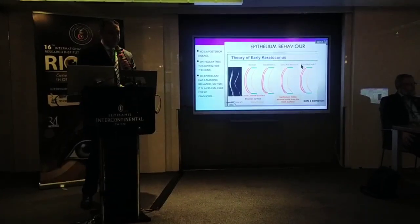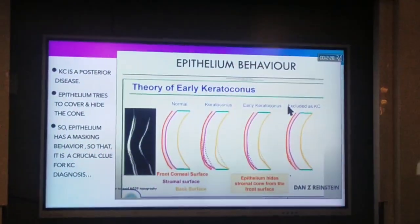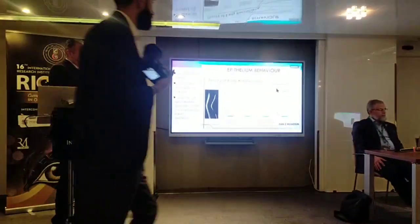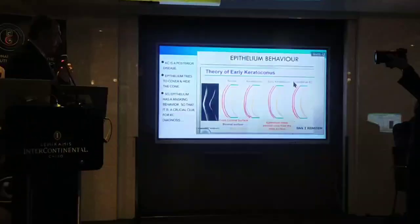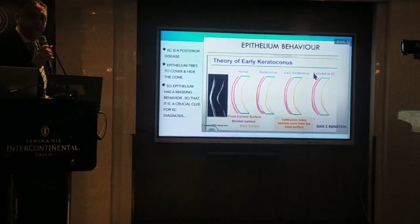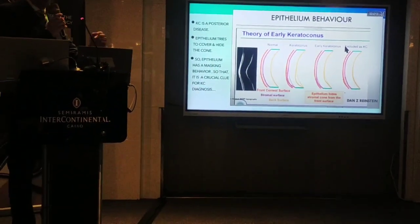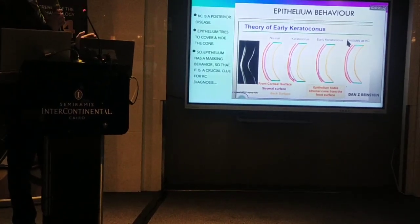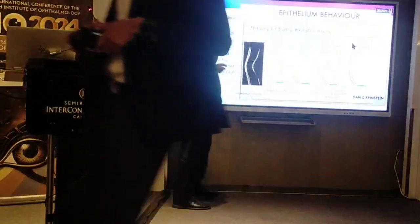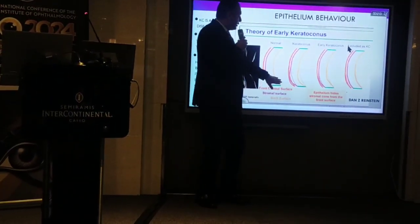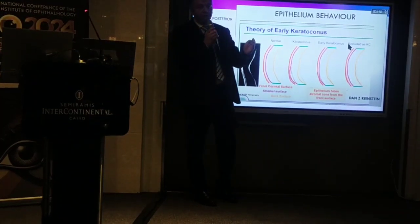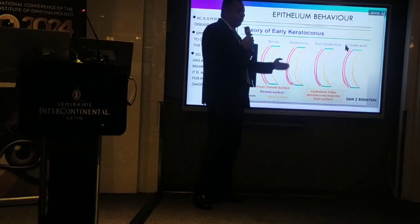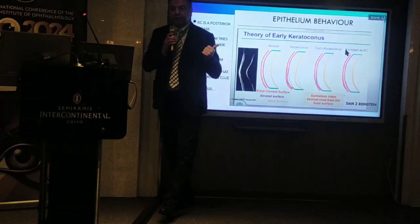Let's talk about epithelial behaviour, as described by Reinstein. The normal epithelium looks uniform. I believe that keratoconus is a posterior disease, so the forward movement of the back of the cornea won't be shown directly on the surface because of the masking effect of epithelial thinning on top of the cone, forming a thinning surrounded by a thickening around it. This thinning compensates for the protrusion of the stromal surface, so it won't be detected by topography at the start.